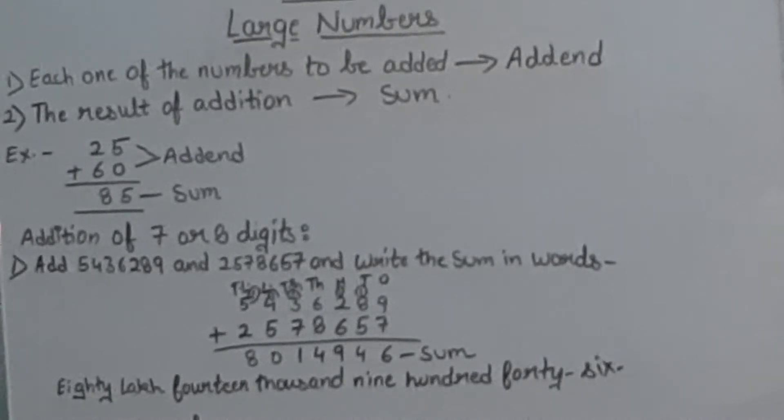Now let's take a few more examples - addition of seven or eight digits. We all know how to add smaller numbers, but here I have taken big digits. First, add 5413289 and 2578657 and write the sum in words. Write the first number, then in the next line write the second number.